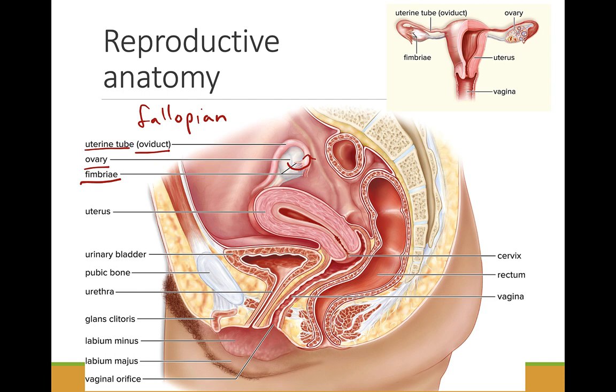The egg usually moves into the tube, but it can escape into the abdominal cavity. This is how ectopic pregnancies outside of the reproductive system can occur.